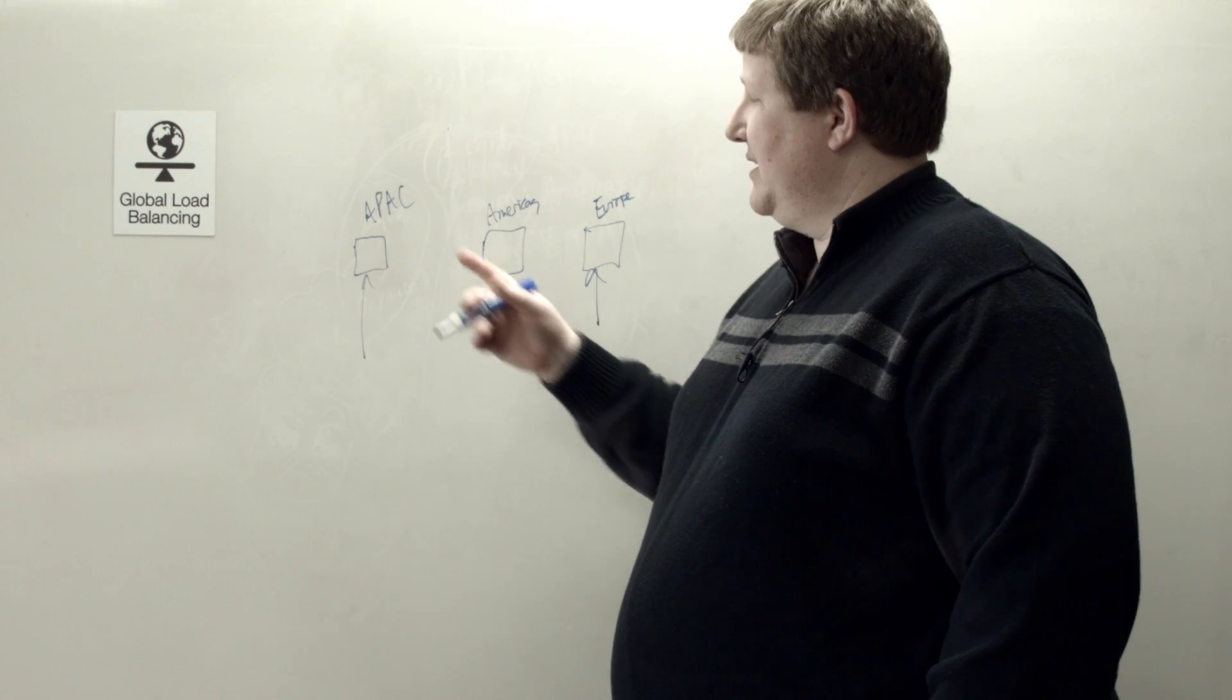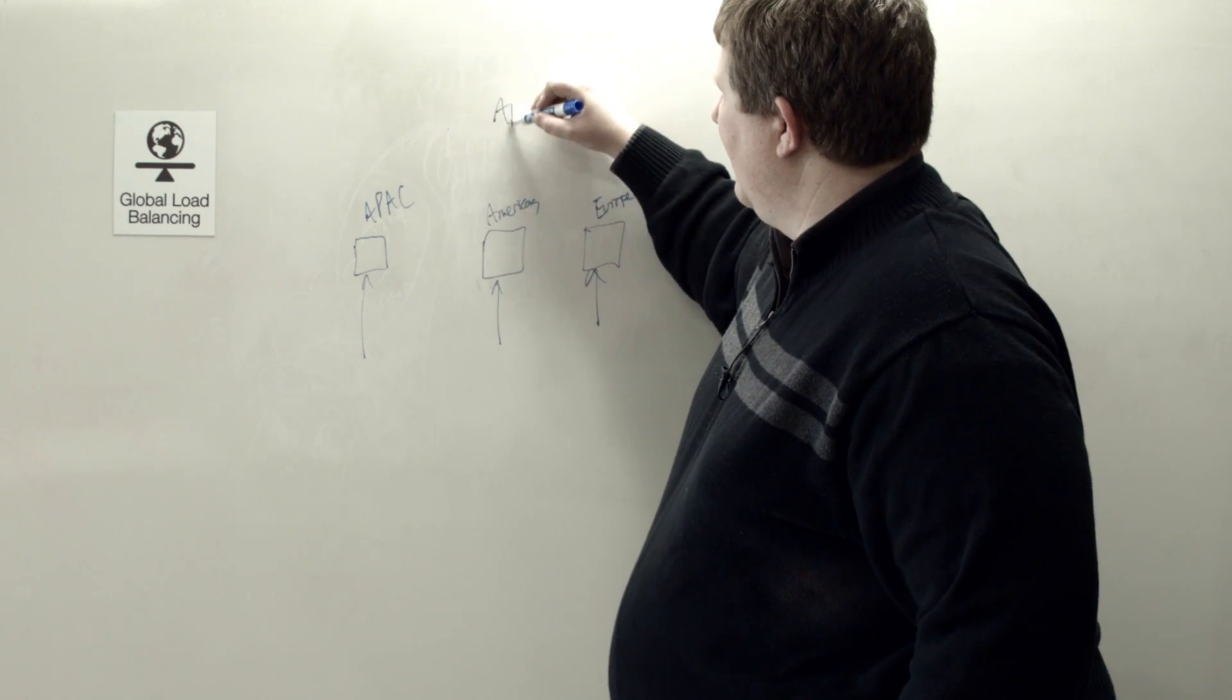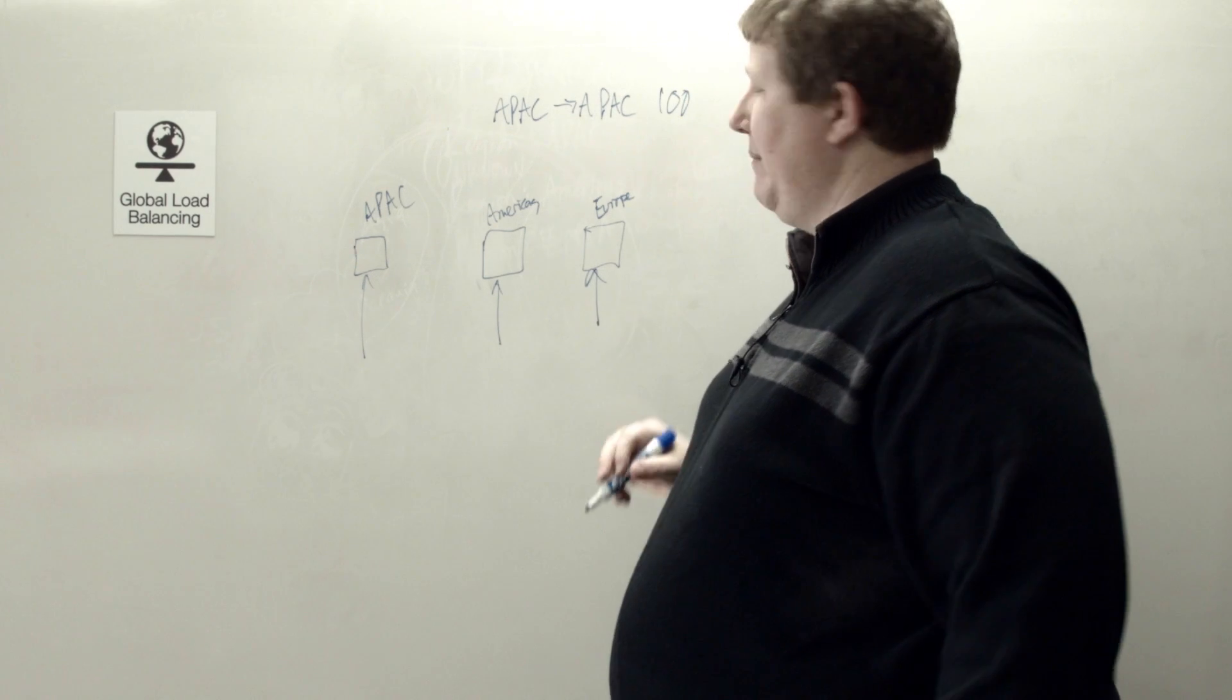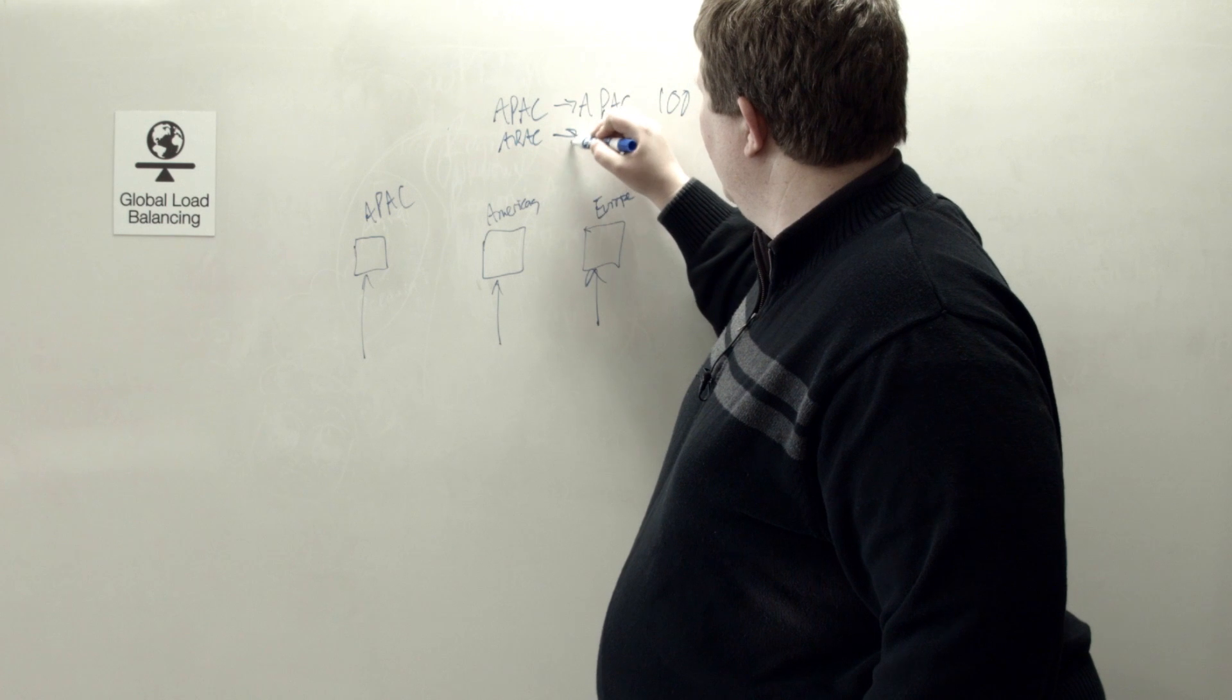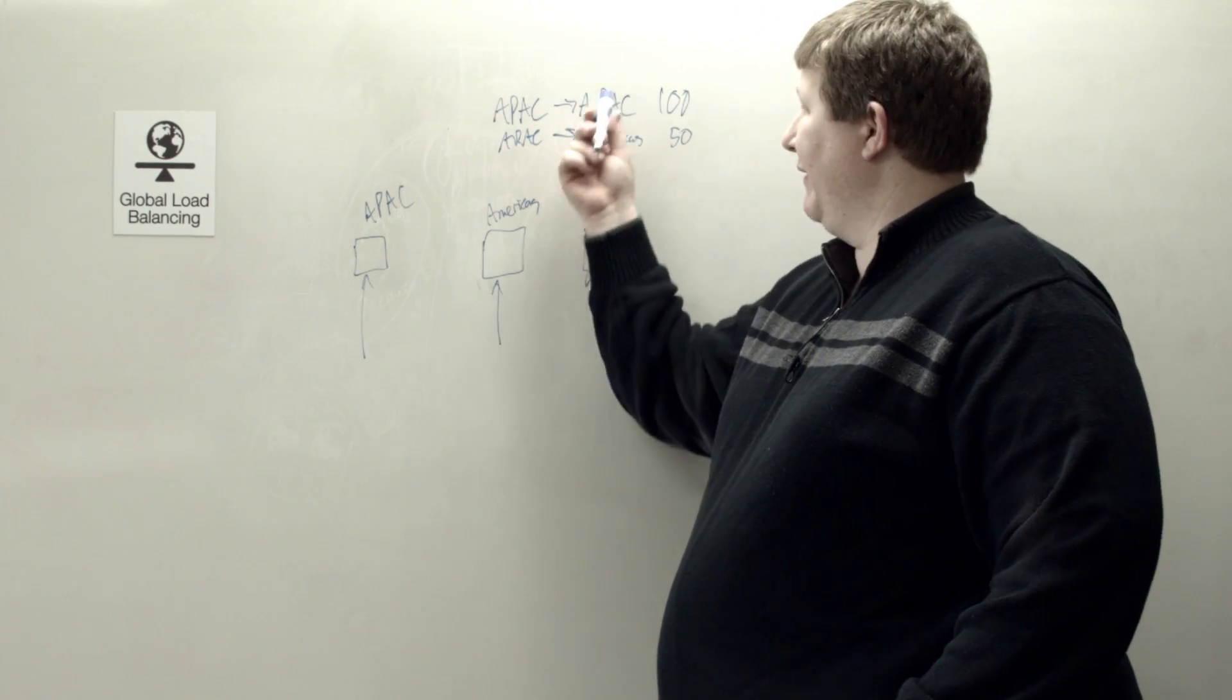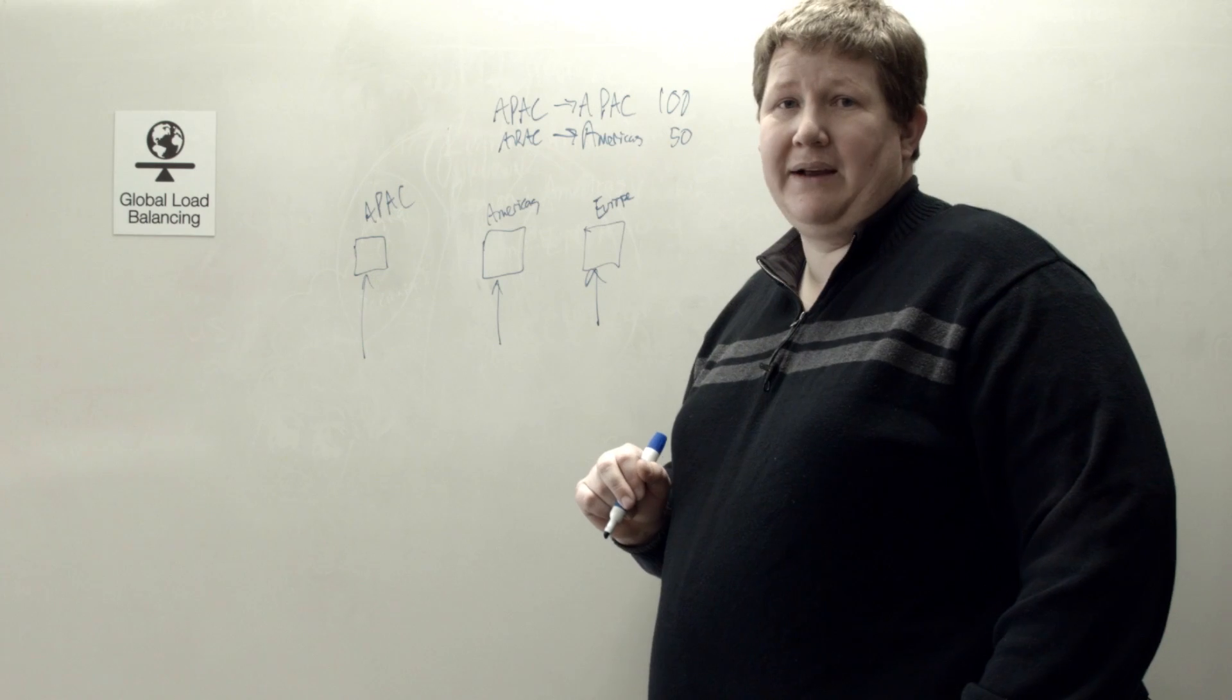And that's all well and good. However, if for whatever reason this is down, where else am I going to send it? And that's where you can create multiple topology records to say that if I have traffic from APAC, send it to APAC primarily. And let's say I put a weight on that when I create my record of 100. If for whatever reason that's not available, I want it to go to the Americas. And maybe set that at 50. And that way, the weight's going to carry all of that traffic to APAC unless that record isn't available at that time. And then it'll go ahead and select the Americas.